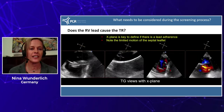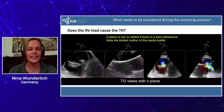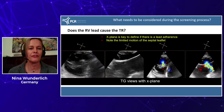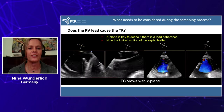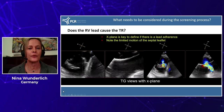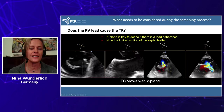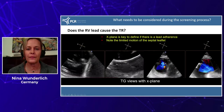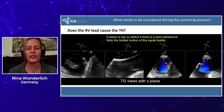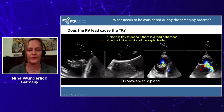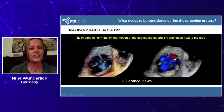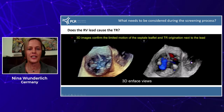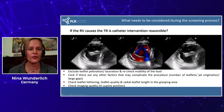Looking at the transgastric view, the pacemaker lead moves in unison with the septal leaflet. One of the major imaging modalities that helps define if a lead is connected to the septal leaflet is x-plane imaging or multiplanar reconstruction. On the x-plane image, you can nicely see the leaflet moving with the lead, suggesting they are connected. With color Doppler, the jet originates close to the pacemaker lead. The 3D en-face views confirm that TR originates very close to the pacemaker lead.